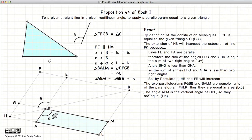And finally, since we copied the angle delta to GBE, and these two angles are vertical angles of each other, then ABM is also equal to our original angle delta.